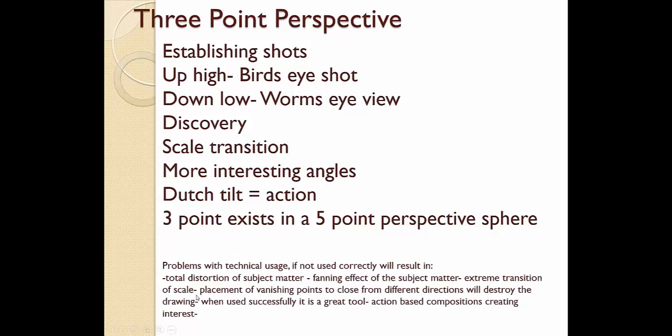Common problems: three-point perspective is technical and if not used correctly results in number one — total distortion of subject matter because the subject matter is too large and you don't understand scale and transition. What ends up happening is the world is too large inside the vanishing points and you get what we call the fanning effect. The fan effect means your subject matter is fanning out distorted — the subject matter is too large inside your rules. Pay attention to size; it has to be smaller.